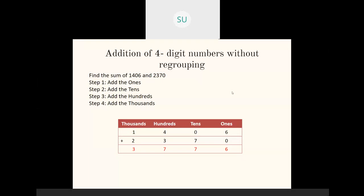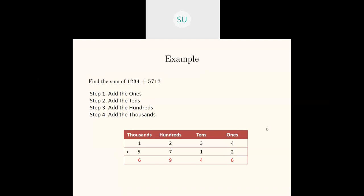For addition without regrouping, the first step is to add all the ones. Then write the answer in the ones column. Then move on to tens, add all the tens place numbers, and write the answer in the tens column. Then move to hundreds, add all digits in the hundreds place and write the sum. Then move on to the thousands place and add all the thousands. This was addition of four-digit numbers without regrouping.